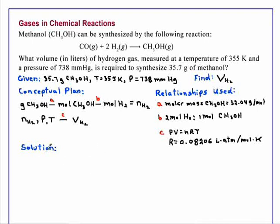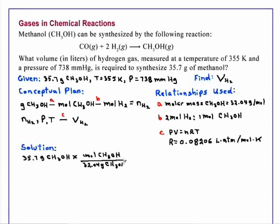With this information in hand, we're ready to solve the problem. Starting with the number of grams of the alcohol, 35.7, we will convert that to moles using the molar mass. One mole of the alcohol is 32.04 grams of the alcohol. The grams of alcohol cancel and this gives us the moles,